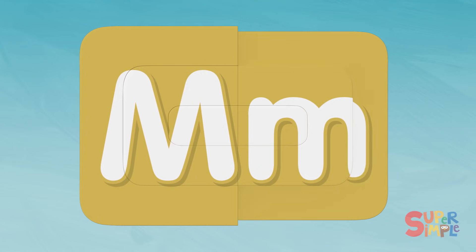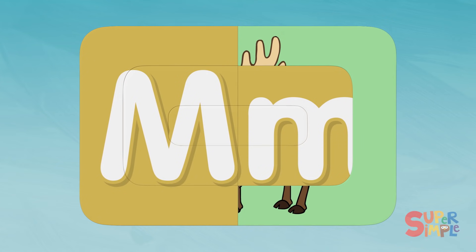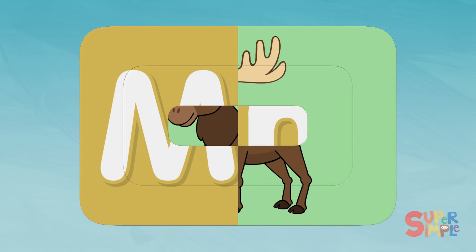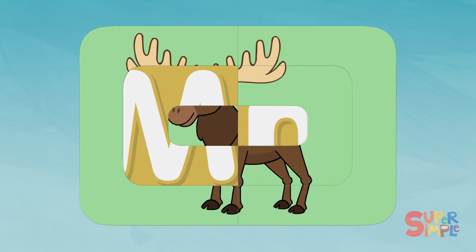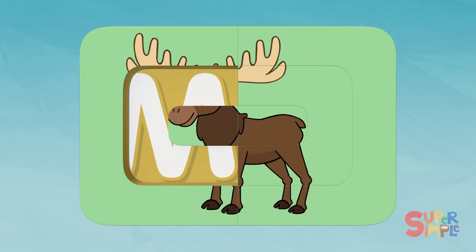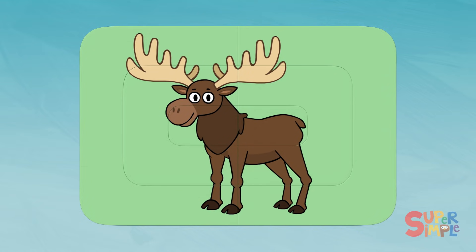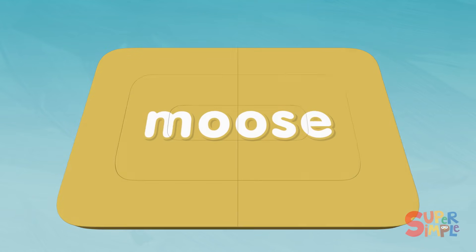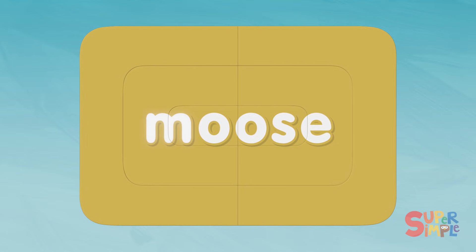M! I see two feet. This looks like some kind of animal. I see legs. Moose. Hmm, what could this be? Oh, I think I know. Do you? Moose! Moose begins with the letter M.